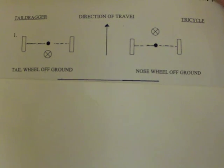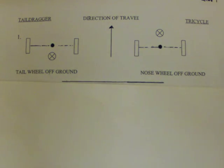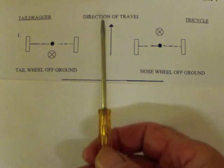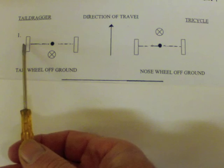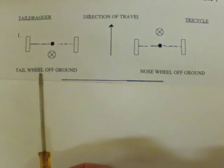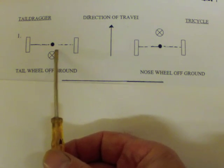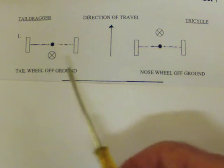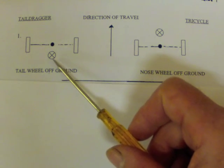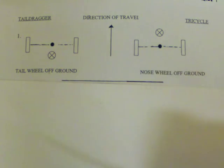Now let's look at why the aircraft has a propensity for what's called a ground loop — losing control in yaw during the rollout. With the main undercarriage on the ground of a tail dragger but the tail off the ground, there is a main point of contact halfway between the two wheels over the imaginary axle line. Meanwhile, its centre of gravity, which is also the centre of inertia, is behind the wheels — hence it's a tail dragger.